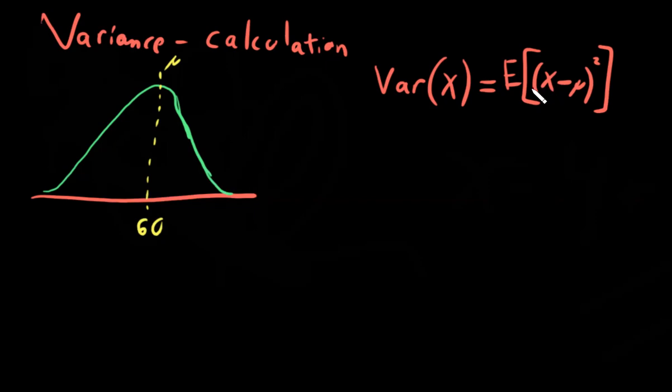and you pick any point on this curve, you want to look at the distance between that point and its mean, take the difference between those two, square it, and then multiply that by how likely that point is to show up. Right, this is also equal to